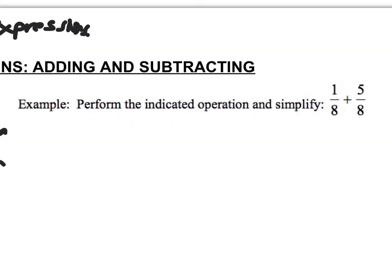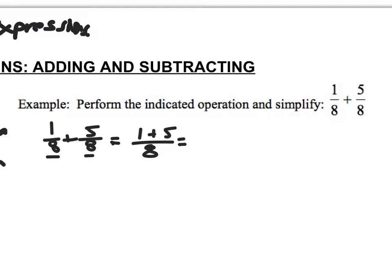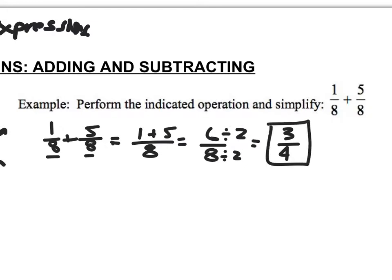Let's look at this first example: one eighth plus five eighths. Because I have a common denominator of eight, I'm just going to add my numerators. I'll write this as one plus five, all over eight, which gives me six over eight. Each of those numbers are divisible by two, so it simplifies to three fourths.